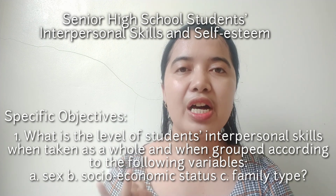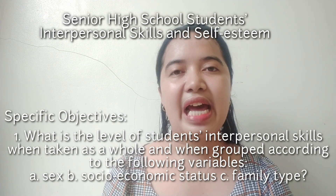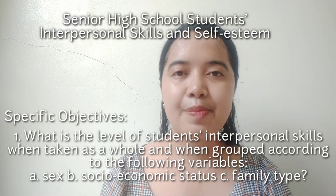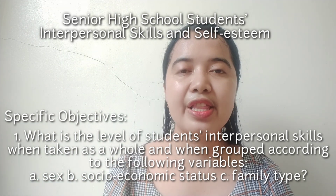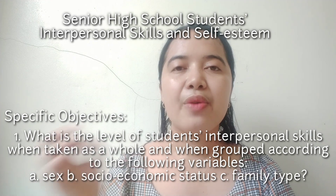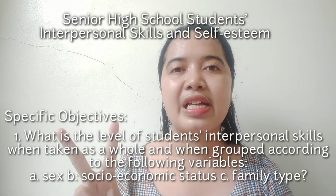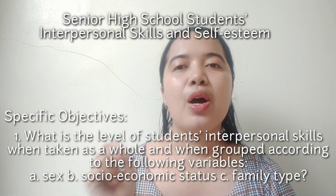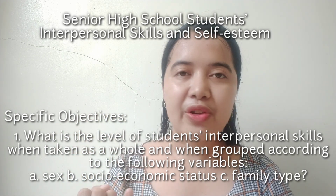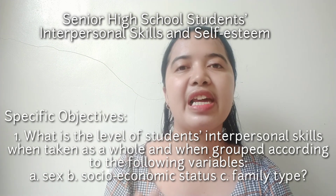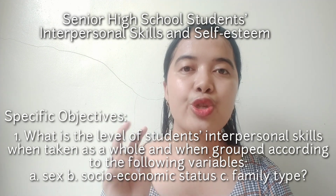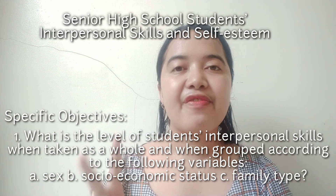First, we have sex. Second, socioeconomic status. And third, family type. So the first thing we're going to do is to check the general scores — the general level of all the participants. Second is to check their level of interpersonal skills depending on their group or variables. In sex, we classify it into two categories: male and female. In socioeconomic status, we group it into three: low-income, middle-income, and high-income generating family. In family type, we categorize it into two: nuclear family and extended family.